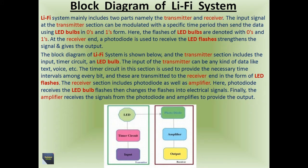Now we talk about the block diagram of the Li-Fi system. The Li-Fi system mainly includes two parts: the transmitter and the receiver. The input signal at the transmitter section can be modulated with a specific time period, then data is sent using LED bulbs in zeros and ones form. The flashes of LED bulbs are denoted with zeros and ones.